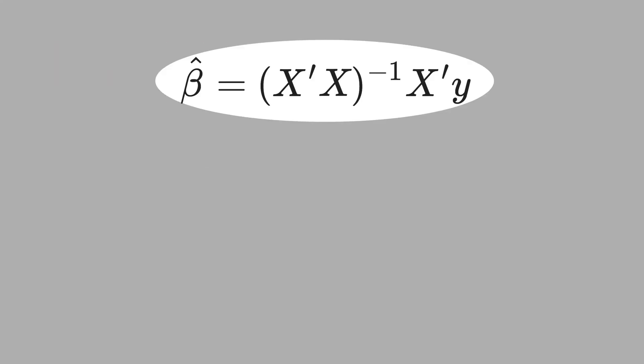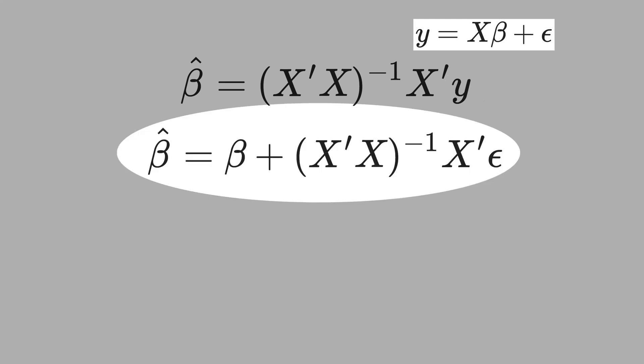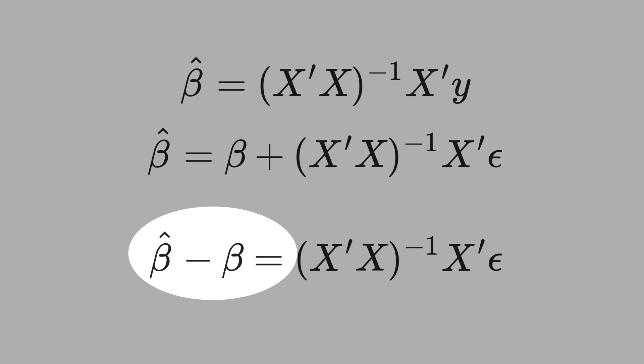First, let's write the definition of beta hat and substitute y by the definition of the regression. If you distribute y, you get this expression here. Now, let's take this beta here and pass to the left side. Then we get beta hat minus beta equal the covariance matrix of X inverse times X transpose epsilon.